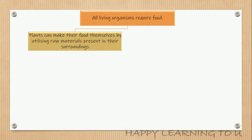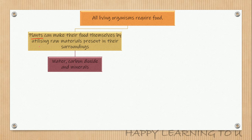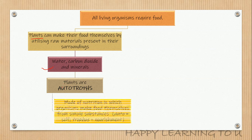All living organisms include plants, animals, and humans. Among these, plants can make their food themselves by utilizing raw materials present in their surroundings — water, carbon dioxide, and minerals. Therefore they are known as autotrophs: a mode of nutrition in which organisms make food themselves from simple substances available in their surroundings.